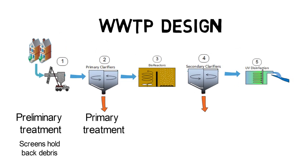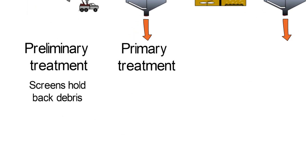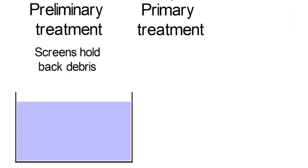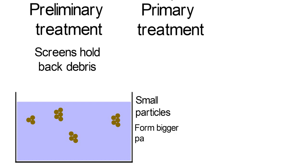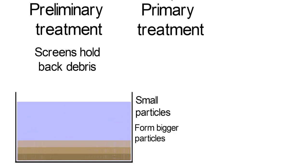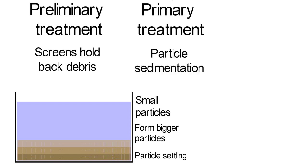The primary treatment leads the effluent to tanks that allow for initial sedimentation of grit. By applying slow mixers at the top of the tanks, sediments are separated by gravity and sink to the bottom of the settling basins. The effluent is then filtrated to also remove debris that have floated in the tanks.